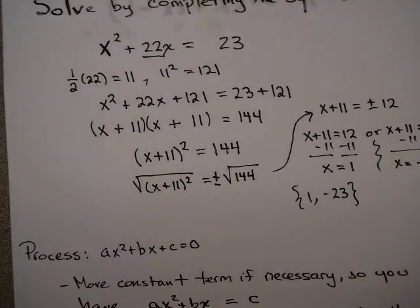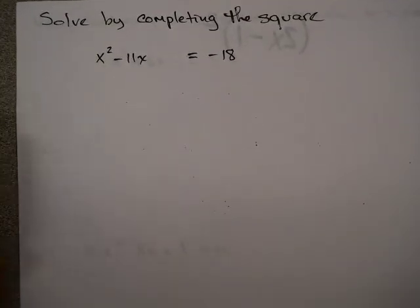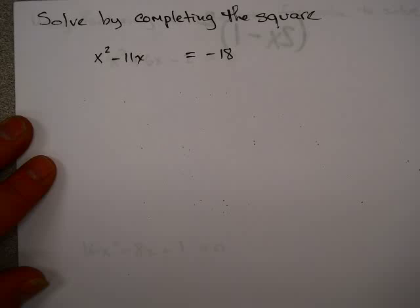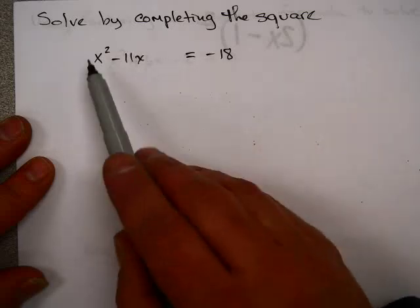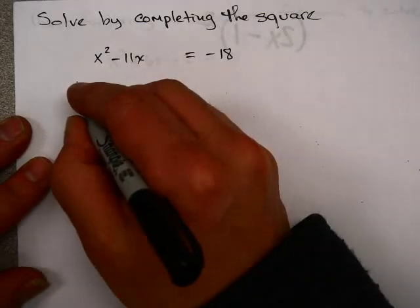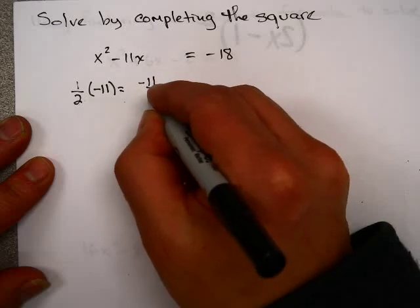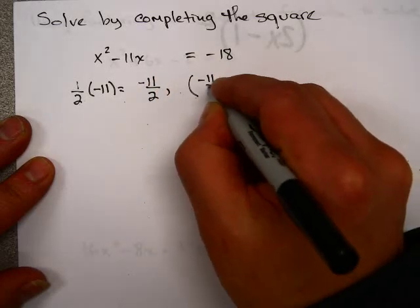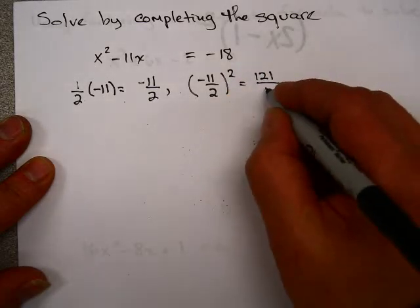Let's apply this to a practice problem. You might take a moment to pause the video to solve it yourself. The constant is on one side by itself and the leading coefficient is 1. So I'm going to take half of negative 11. I prefer to use fractions — negative 11 over 2, squared, gives 121 over 4.